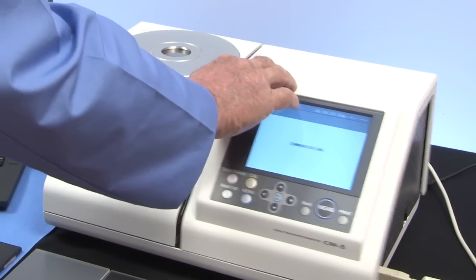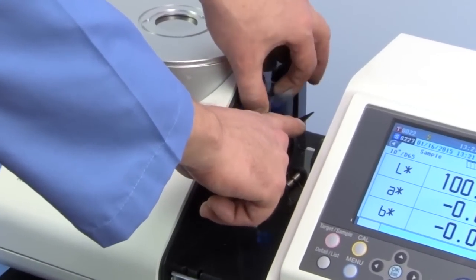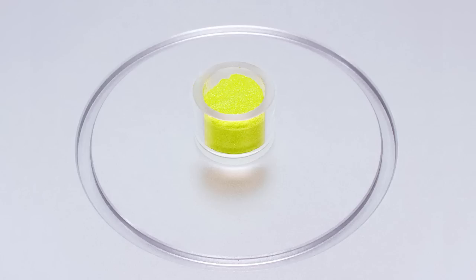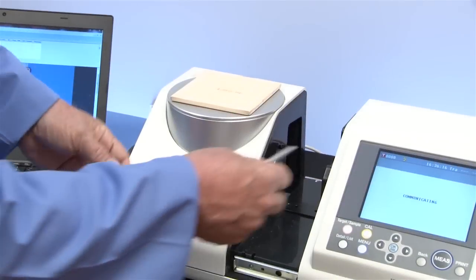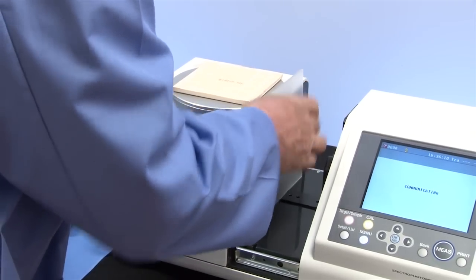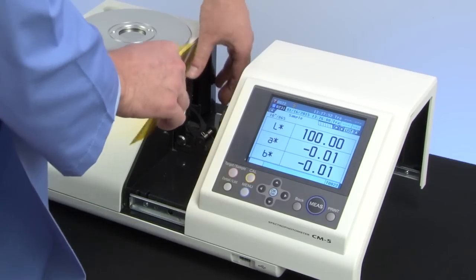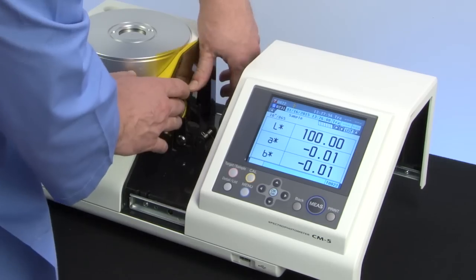The CM5 measures a variety of samples with different material characteristics such as liquids, powders, paste and granules, as well as the haze of transparent films and glass. The transmittance chamber can hold large sheets up to 60 mm thick.